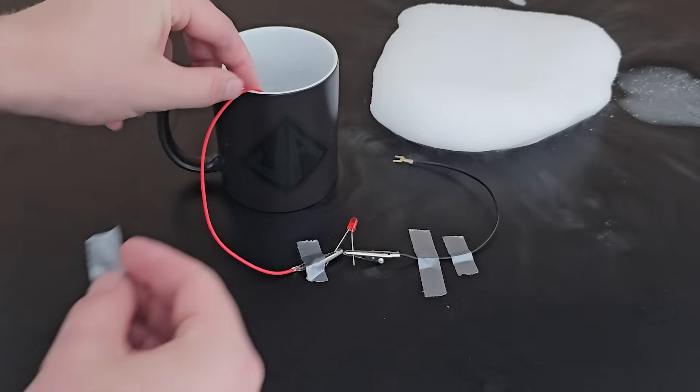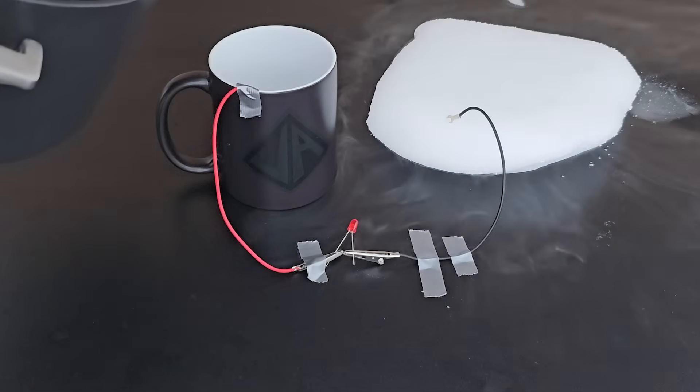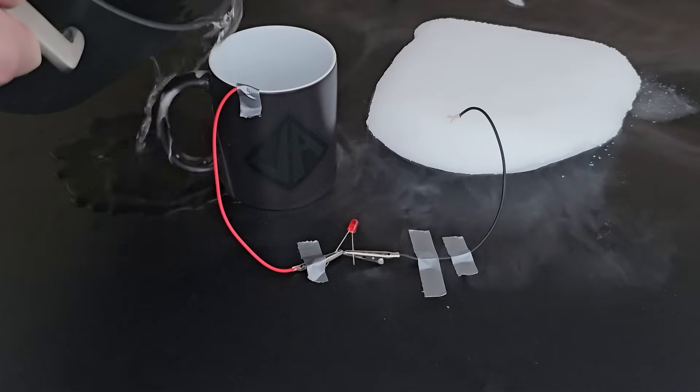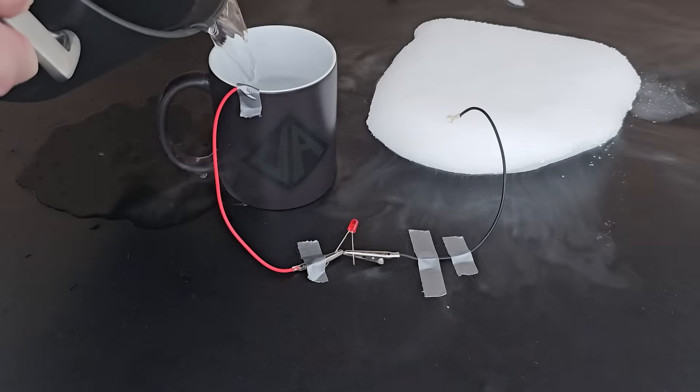Next up you need hot water and some dry ice. If you have a large enough potential difference from the near boiling water to the really cold dry ice, the electrons will flow through the wire and light up the LED.